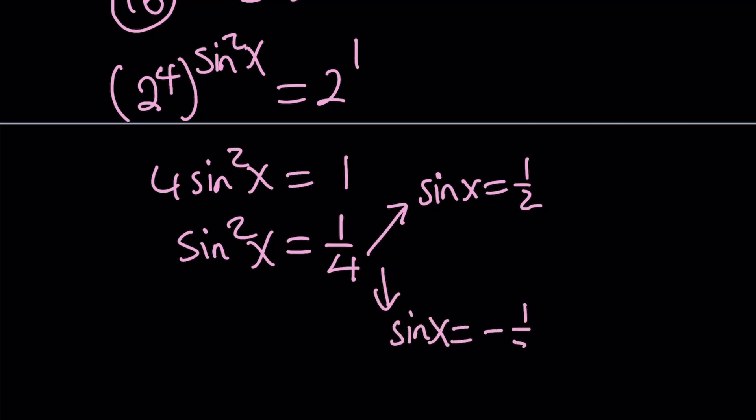Let's find solutions between 0 and 2π, and then you can generalize by adding multiples of 2π. From here x can be π/6, which is the same as 30 degrees. Or you can subtract π/6 from π to get 5π/6.